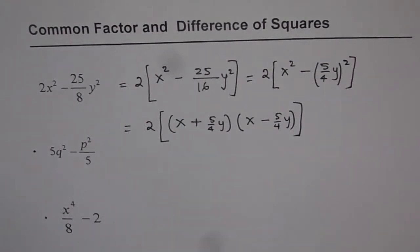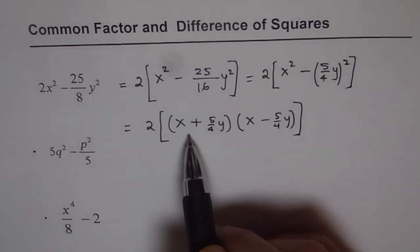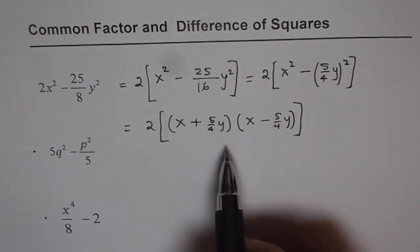So that is how we can factor such expressions. So I would like you to factor the other two in a similar fashion and practice. At times, we may ask you to write these numbers without fractions. In that case, we may have to take 4 common. Right? And then multiply and get the answer. We will leave it for now. But at times, it may be required.